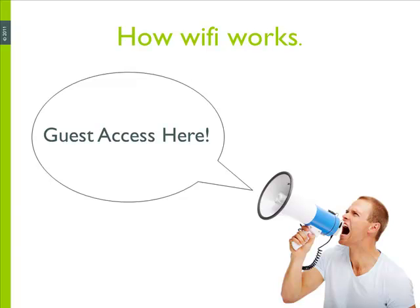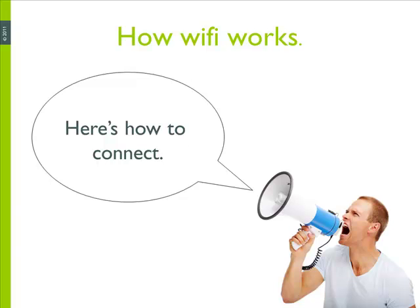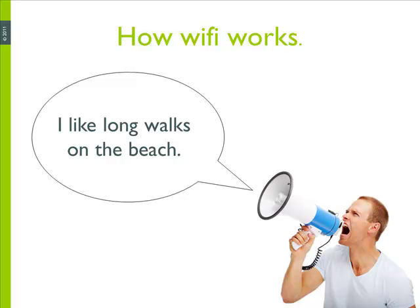So wireless networks — we all know there are wireless clients or devices and access points. If we think of the access point as a person with a megaphone, this person is just yelling several times a second the name of the network, saying "hey, guest access here, this is how you connect to me." They can also include other information about the capabilities of that particular network. Some people will say they don't want others parking outside their building and seeing that their network is in the area. So the answer they turn to is SSID cloaking — stopping the access point from broadcasting the name of the network.